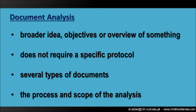Now let's see some differences between systematic review and document analysis. First, document analysis does not necessarily include a single specific research question. You may have a broader idea, objectives, or overview of something that you want to explore in the documents. Second, inclusion and exclusion criteria and searching and selection of the documents does not require a specific protocol as in systematic review. In document analysis, we can just describe the type of documents we need and the sources that can provide us those documents. Third, the documents are not necessarily research articles with empirical evidence. As you have seen, there are several types of documents that can be used in document analysis.